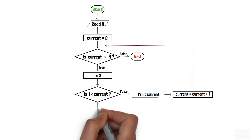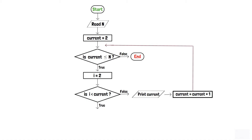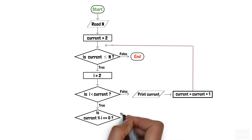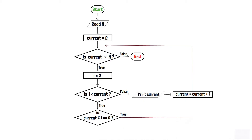If i is less than current, then another decision box checks whether current modulo i equals zero or not. If that condition is true, meaning current is divisible by i, then current is not prime. We increment current by 1 and loop back to the first decision box to re-verify whether current is less than or equal to n.